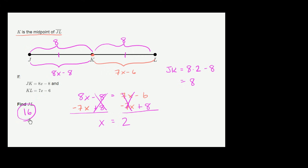And if you wanted to spend extra time to make sure that all of the math is consistent, you could put 2 into this right over here. And 7 times 2 is 14 minus 6 is 8. So once again, you can verify from another direction that this length of segment KL is also 8. 8 plus 8 is 16.